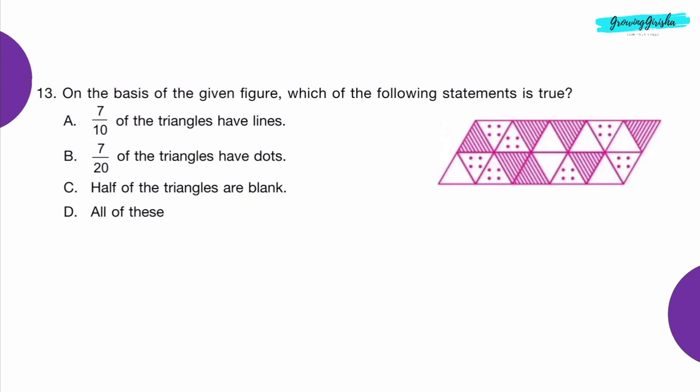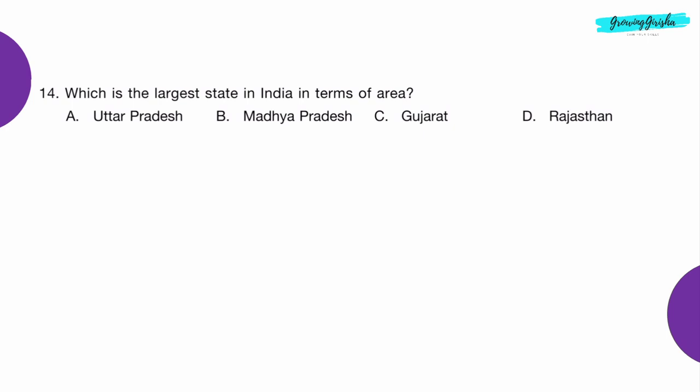Question 13: On the basis of the given figure, which of the following statements is true? Option B: 7 upon 20 of the triangles have dots.